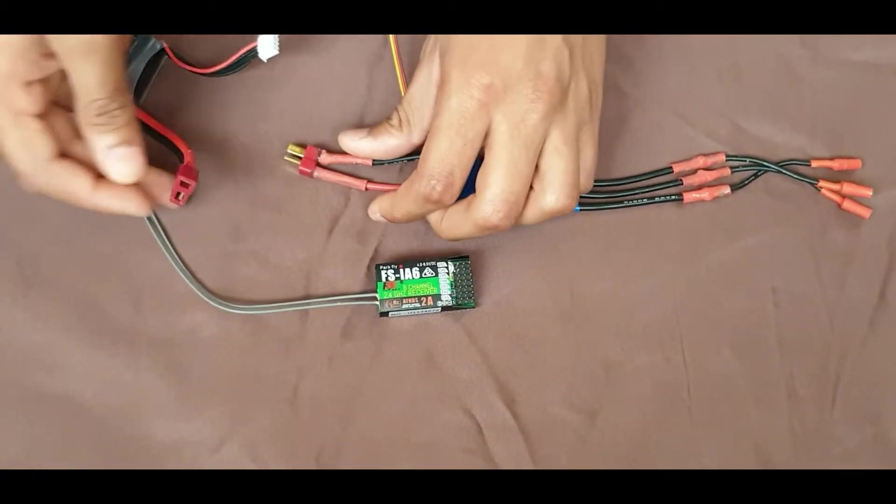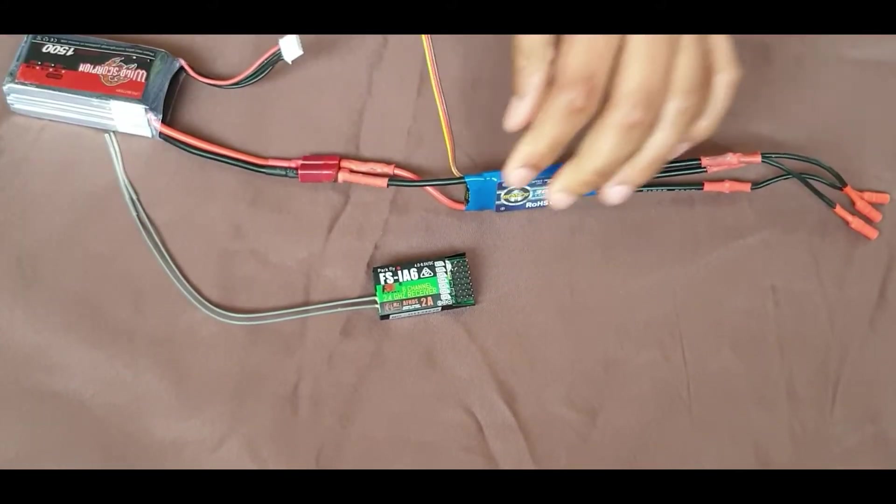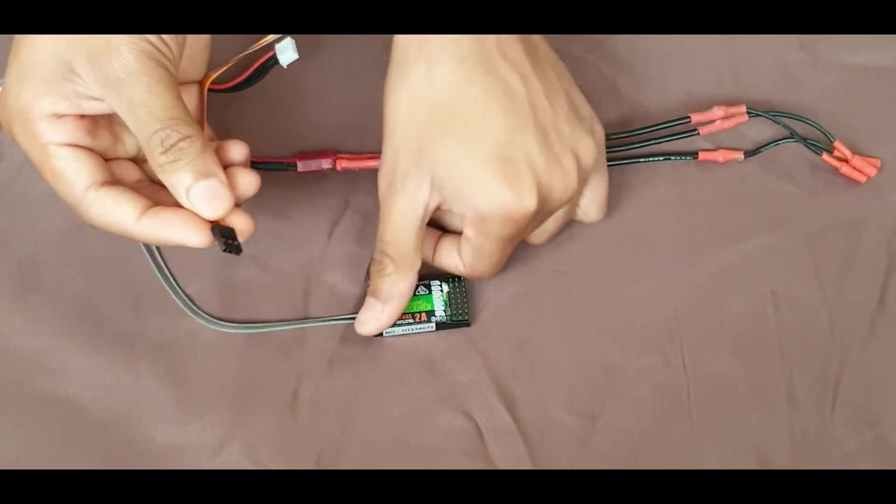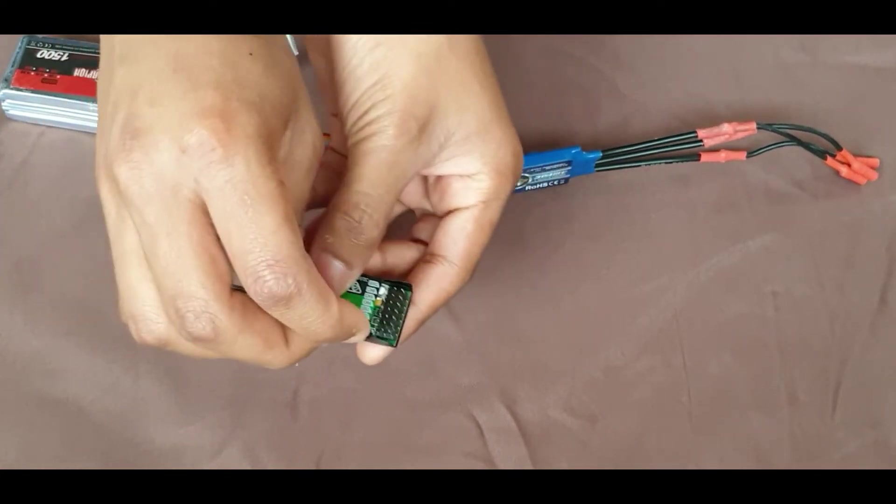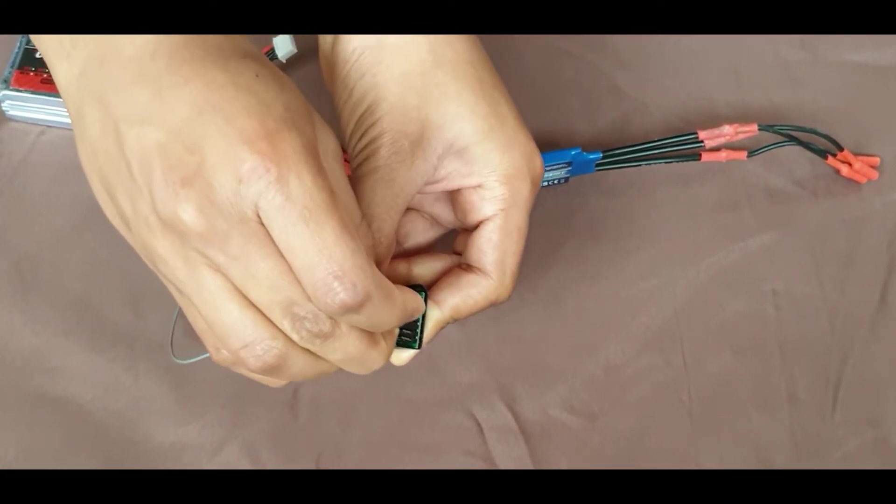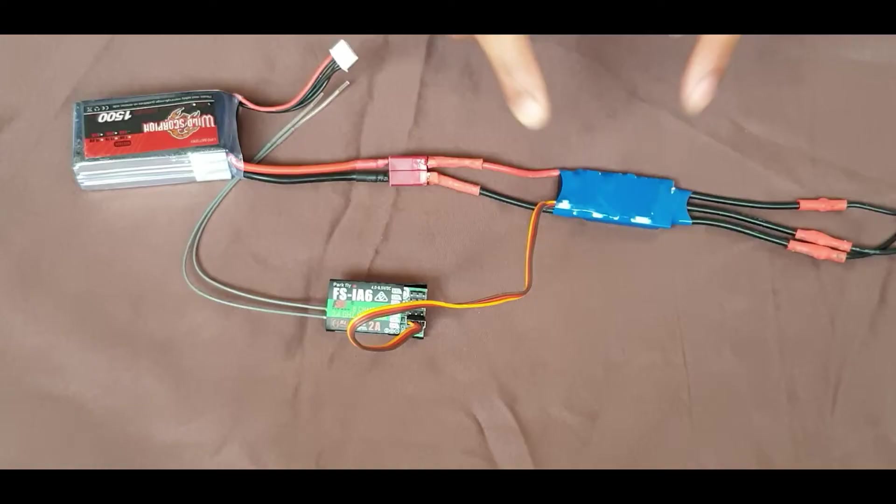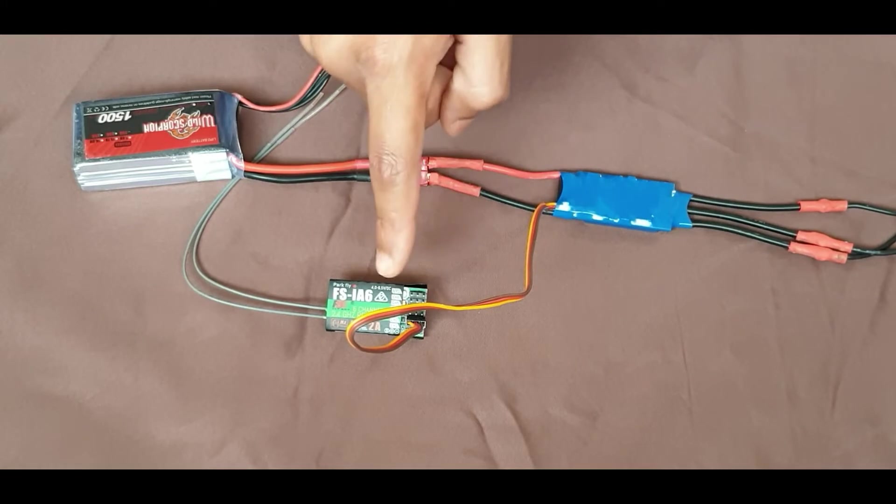Basically what you're going to do, you're going to get your ESC and you're going to stick it to your battery and you're going to have this wire coming out and this wire is going to go to the third channel. And as you can see the receiver has started to glow. Now this ESC is going to give the receiver the right amount of voltage from the battery.